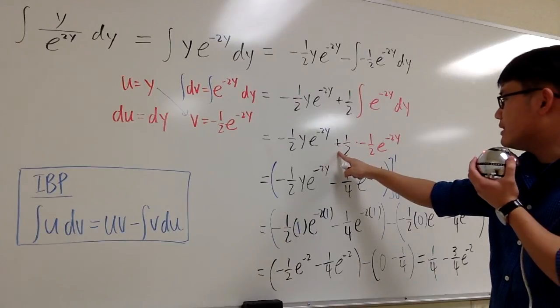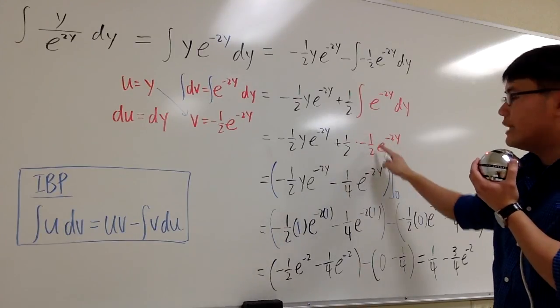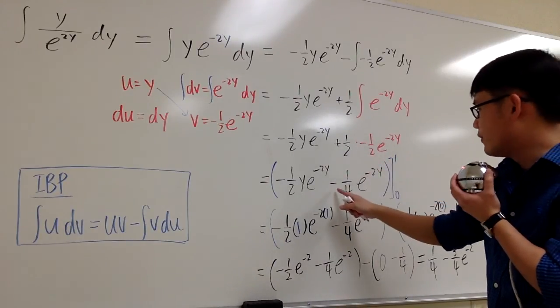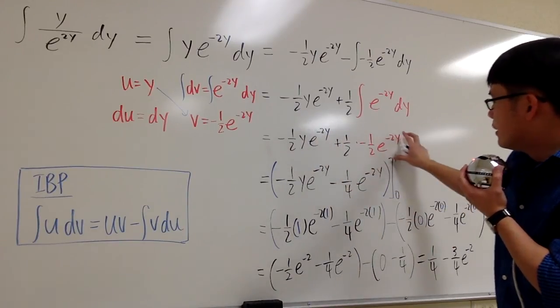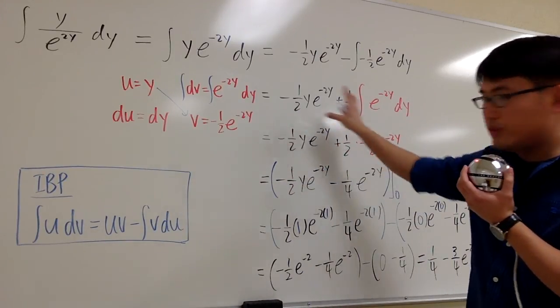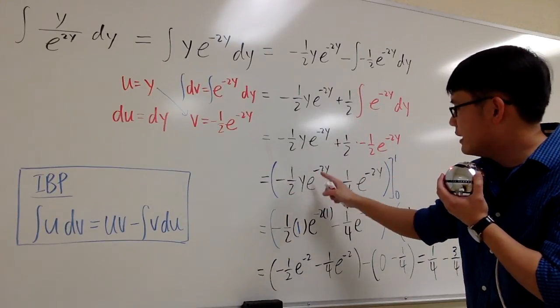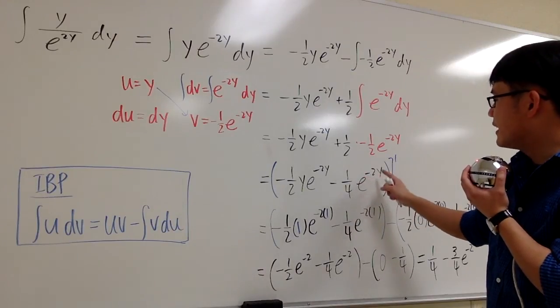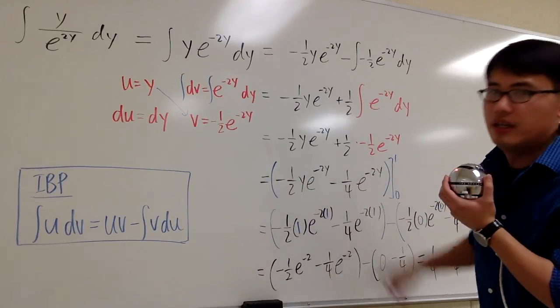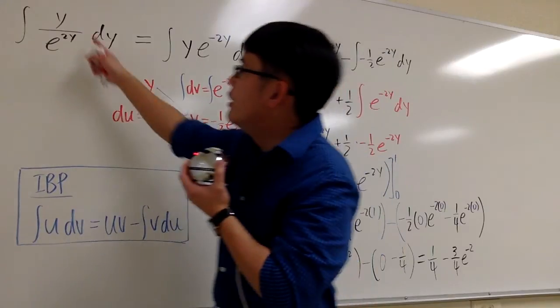We get negative 1 half e to the negative 2y. And as you can see, we have the positive 1 half right here, times negative 1 half right here. All together, we of course get negative 1 over 4. And so, the final result after we do all this is negative 1 half y e to the negative 2y minus 1 fourth e to the negative 2y. And this right here is the antiderivative for the original integral.